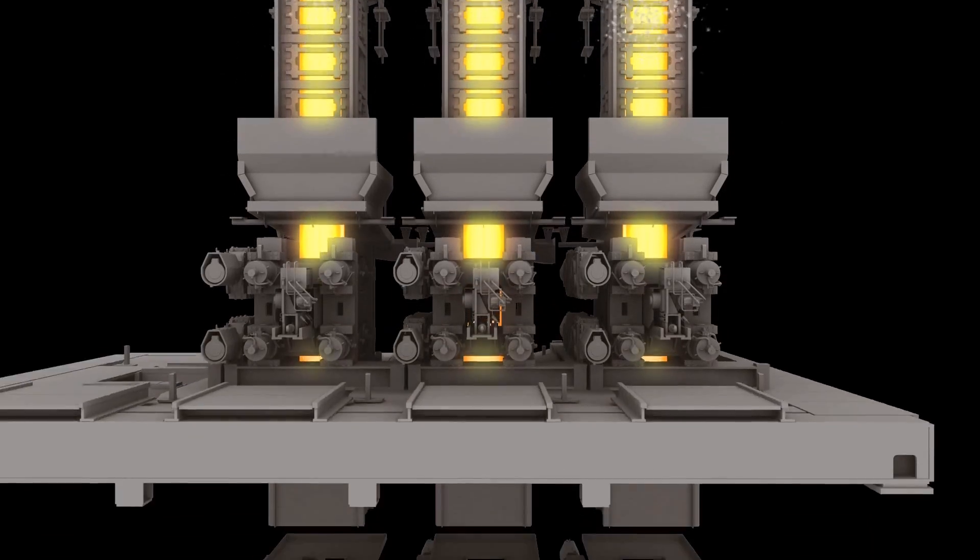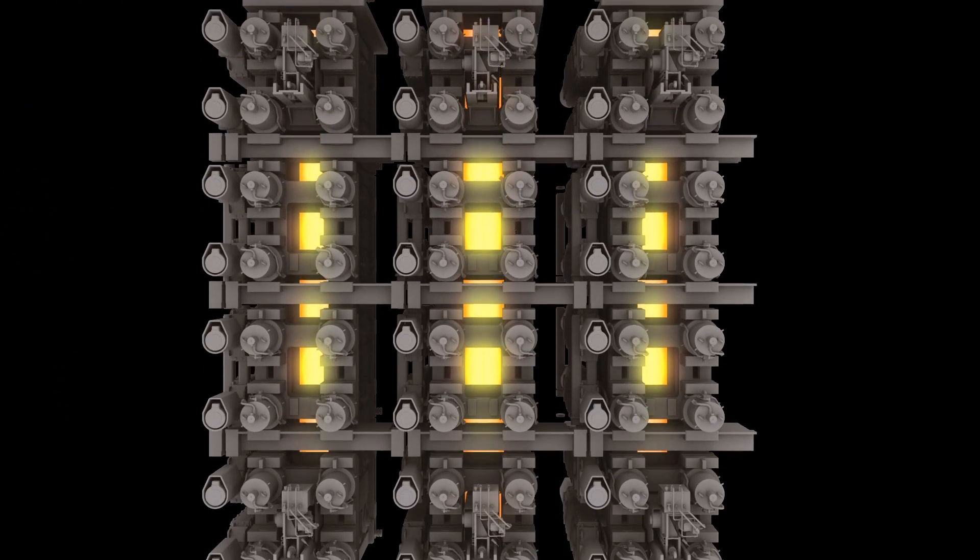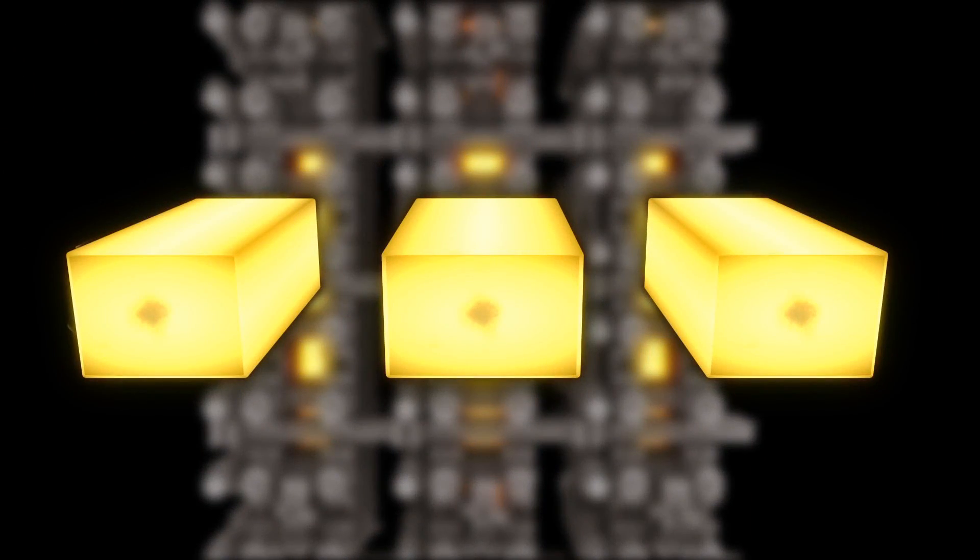Below the segments, a series of large rolls support the strand. Several of these rolls can apply soft reduction, which is a slight squeezing of the bloom shortly before full solidification. This provides the bloom with a superior solidification pattern and minimizes carbon segregation.